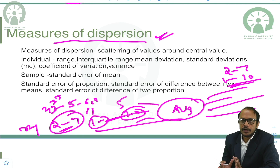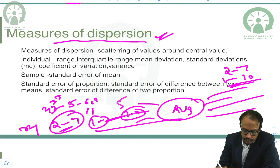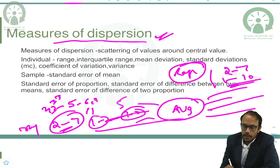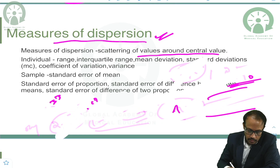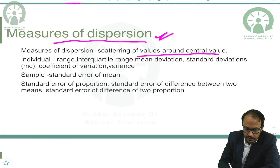How scattered is the data can be found by the measures of dispersion. The basic measure we have found here is range. Range is one of the measures of dispersion. The scattering of values around the central value is the measure of dispersion, and from this we find the standard deviation.